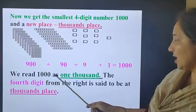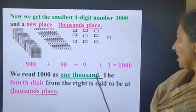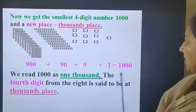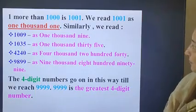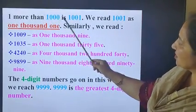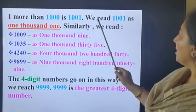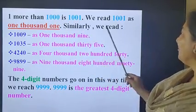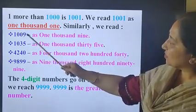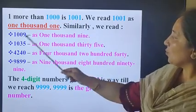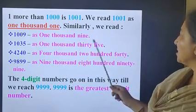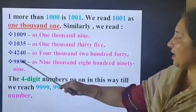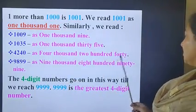We read 1000 as 1000. The 4th digit from the right is said to be at 1000's place. One more than 1000 is 1001. We read 1001 as 1001. Similarly, we read 1009 as 1009, 1035 as 1035, 4240 as 4240, 9899 as 9899.